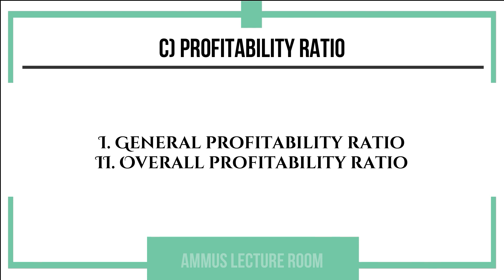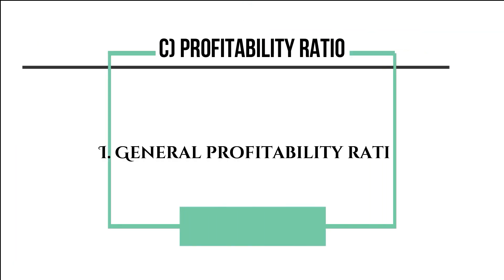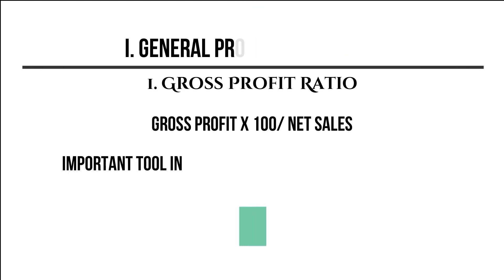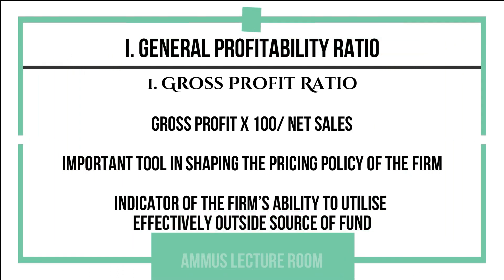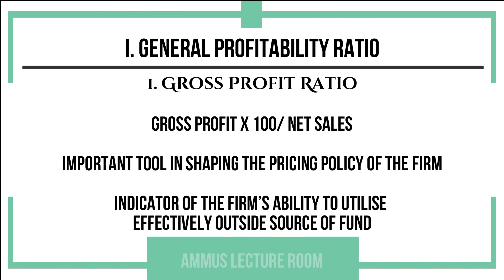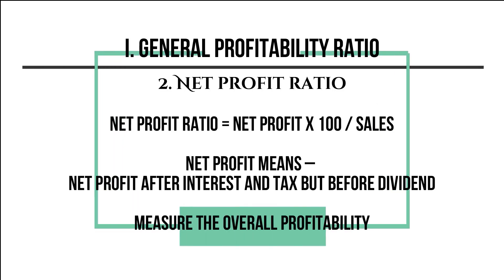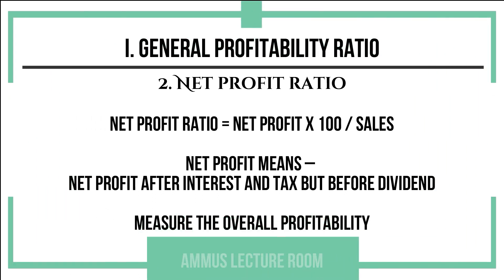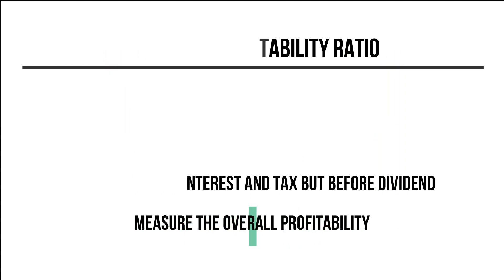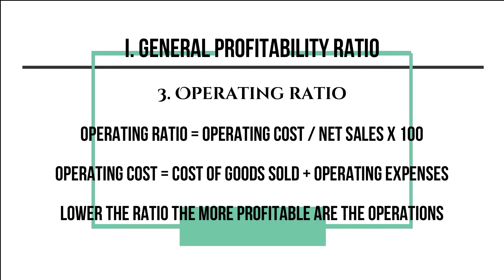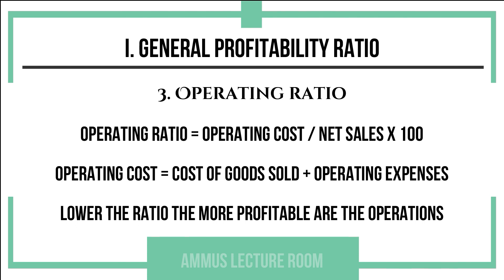Profitability ratios are mainly classified into two types: general profitability ratios and overall profitability ratios. Under general profitability ratios, the gross profit ratio equation is: gross profit multiplied by 100 divided by net sales. It helps shape a company's pricing policy. The net profit ratio equation is: net profit multiplied by 100 divided by sales, where net profit is after interest and tax but before dividend.